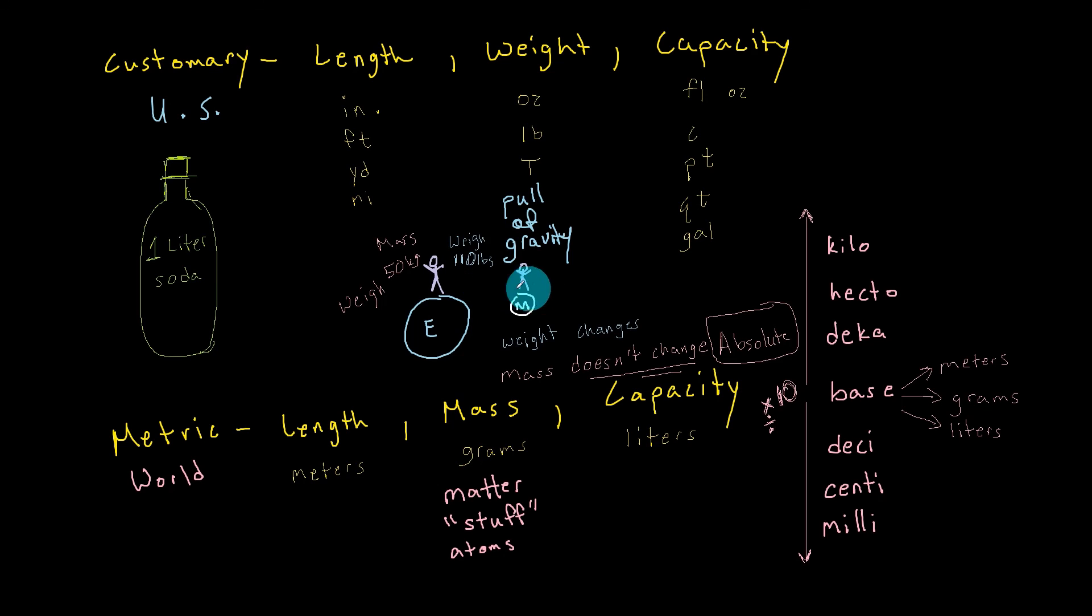So mass is absolute, while weight is relative. It can change depending on the amount of gravity. Let's write down that weight is relative. Cool stuff, guys.